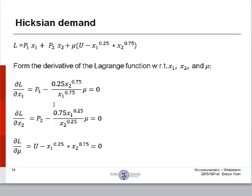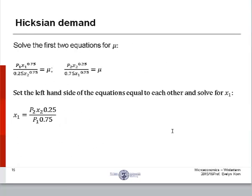We set them all equal to 0. Solve for the first two equations. Solve the first two equations for mu, set the left hand side of the equations equal to each other and solve for x1. You can set this term equal to this term. Put prices on one side of the equation. You'll have the price ratio, which will be equal to the marginal rate of substitution.